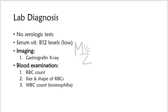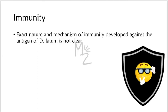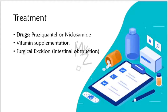Immunity: the exact nature and mechanism of immunity developed against the antigens of Diphyllobothrium latum is not clear. Treatment: drugs of choice are praziquantel or niclosamide. Vitamin B12 supplementation is also given due to the preferential uptake of the vitamin by the worm.